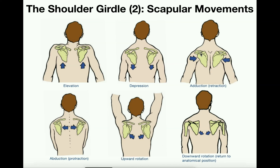The other two major movements are adduction (retraction) and abduction (protraction). Adduction generally means moving toward the midline of the body. In terms of the scapula, this is called retraction — if you think of something retracting, it's coming back toward you, like a cat retracting its claws back into its paw. So in scapular retraction, the scapulae move toward the midline, and this movement is more associated with shoulder extension.